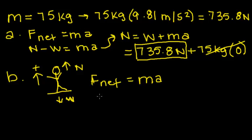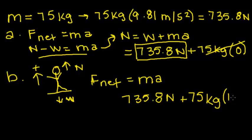F net is going to be the normal force minus the weight, so once we convert, we're going to use this same problem again, and it's going to be 735.8 newtons in his weight plus 75 kilograms, which is his mass, times 1.5 meters per second squared, which is his new acceleration. This total comes out to be 848.25 newtons upwards.